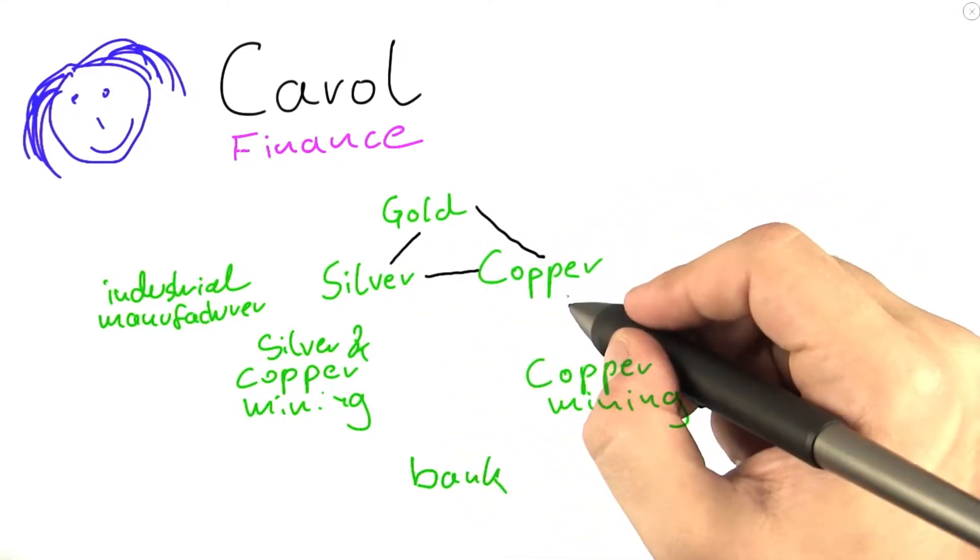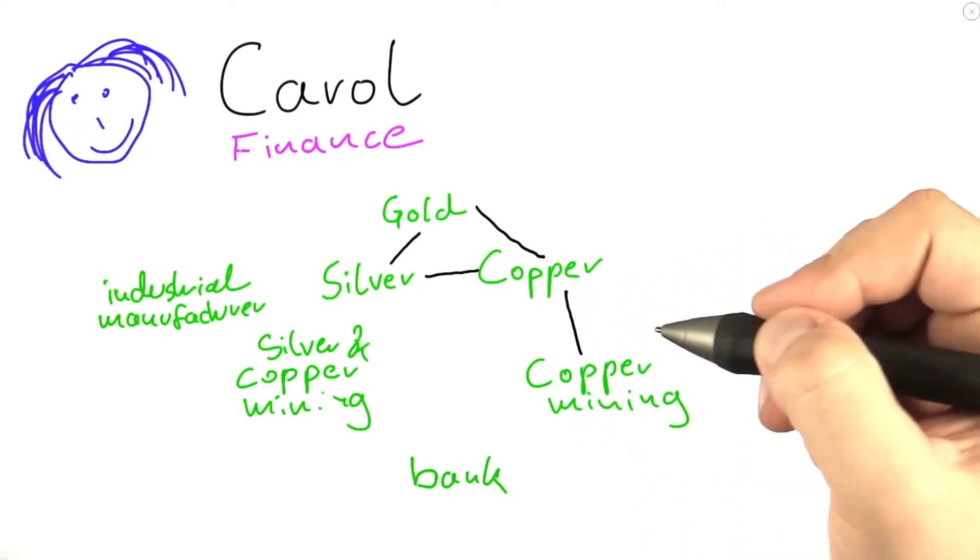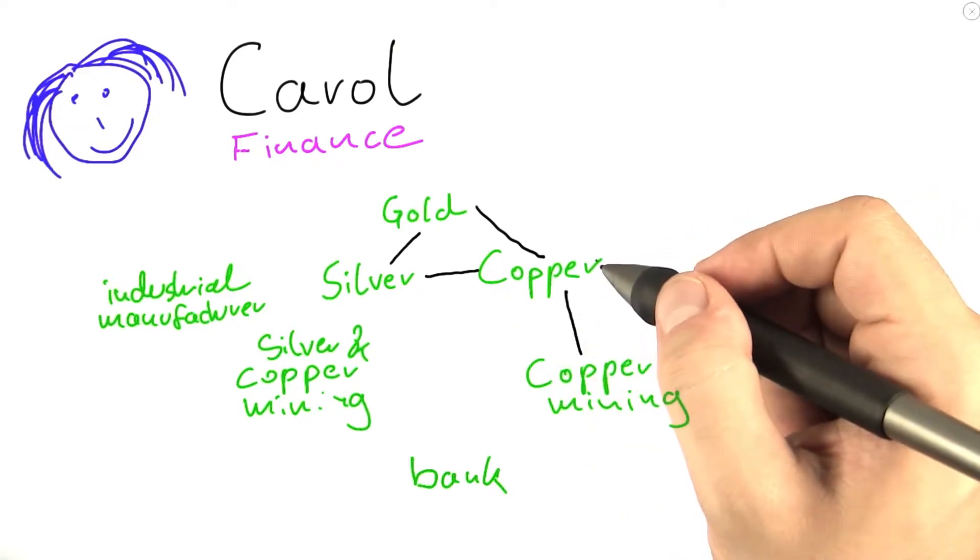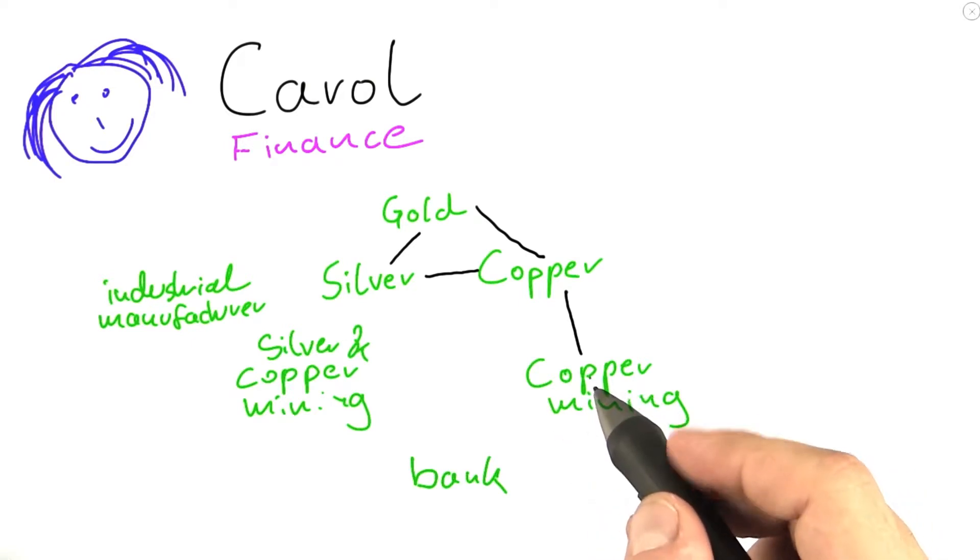And so she basically only wants to invest in one of those precious metals. If she invests in copper, she probably does not want to invest in the mining company because then if the copper price goes down, so will the stock of the copper mining company.